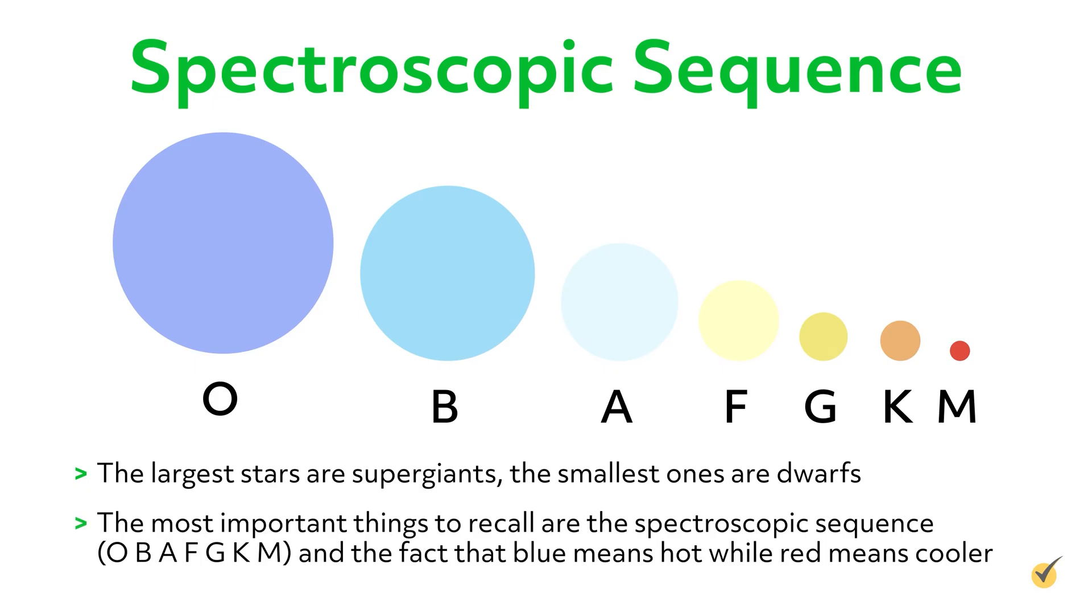The most important things to recall are the spectroscopic sequence, O, B, A, F, G, K, and M. And the fact that blue means hot, while red means cooler.